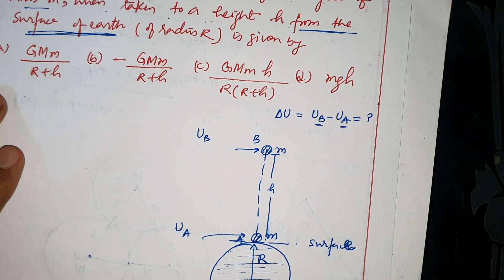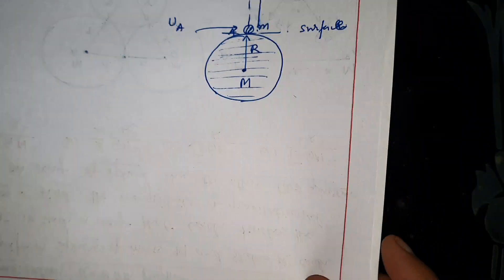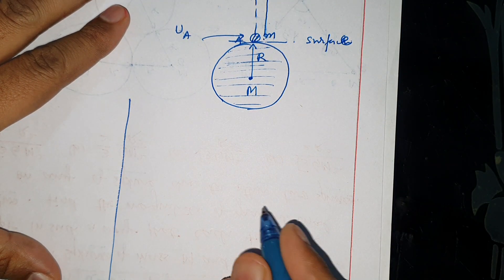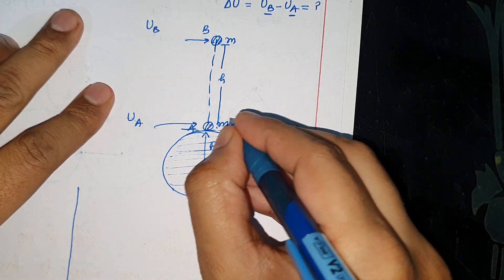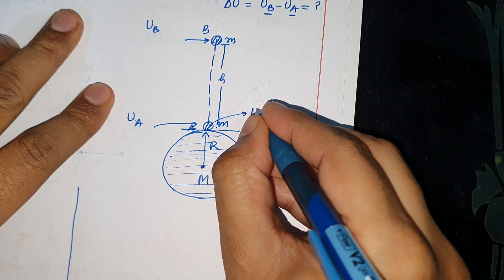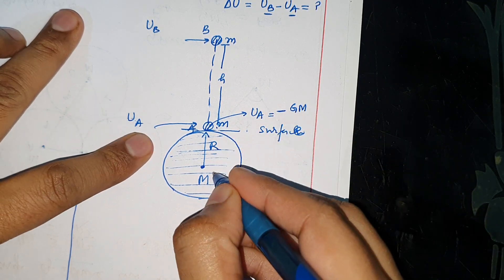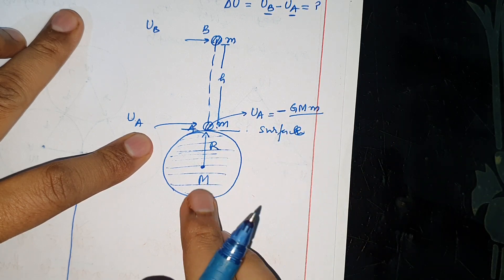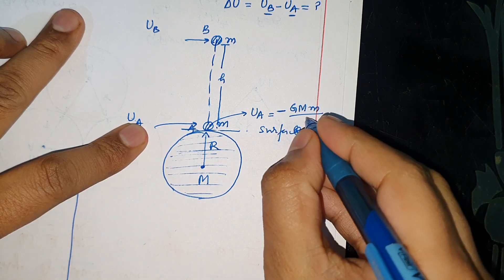At Earth's surface, at this point, Ua will be minus GMm divided by capital R. Earth's surface at this point, the potential energy formula is Ua equals negative G capital M small m over R.